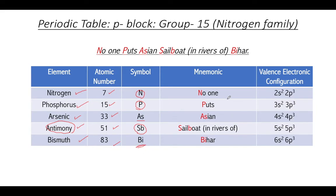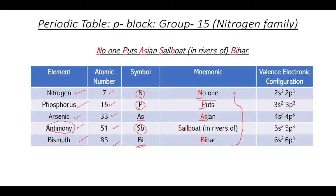The mnemonic for Group 15 is: 'No one puts Asian sailboat in the rivers of Bihar.' No one's N is for nitrogen, 'puts' gives P for phosphorus, 'Asian' gives As for arsenic, 'sailboat' gives S and B for Sb, which is antimony, and from Bihar you pick Bi for bismuth.